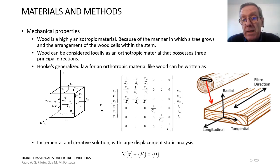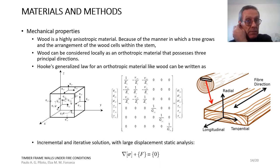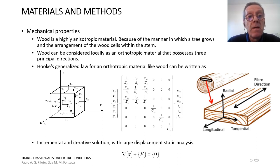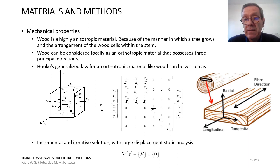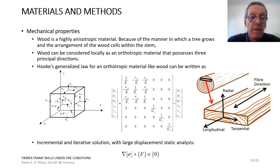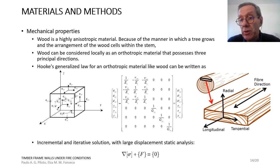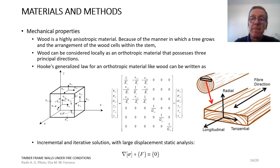This is not only a thermal problem — it is also a mechanical problem. To address the mechanical behavior of wood, we must highlight that wood is anisotropic due to how the tree grows and how wood cells are arranged in the stem. Wood can be considered locally as an orthotropic material, meaning we approximate material properties in three orthogonal axes. The solution requires balancing internal and external forces to find displacements and stresses.